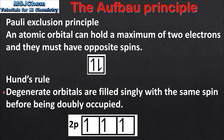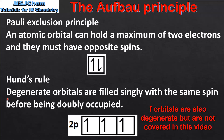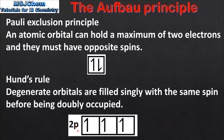Hund's Rule states that degenerate orbitals are filled singly with the same spin before being doubly occupied. Degenerate orbitals are orbitals that have the same energy, such as the 3 p orbitals in a p sublevel or the 5 d orbitals in a d sublevel. For example, when putting 3 electrons in the 2p sublevel, each orbital is first filled with 1 electron of the same spin, and once each orbital has 1 electron we can then doubly occupy each orbital.